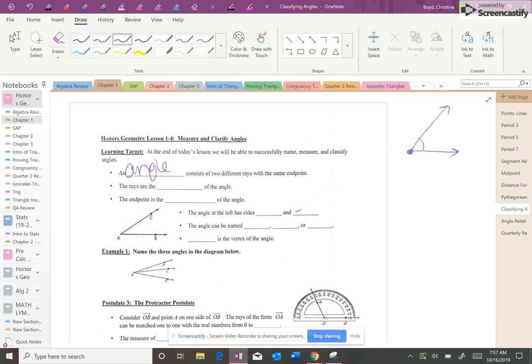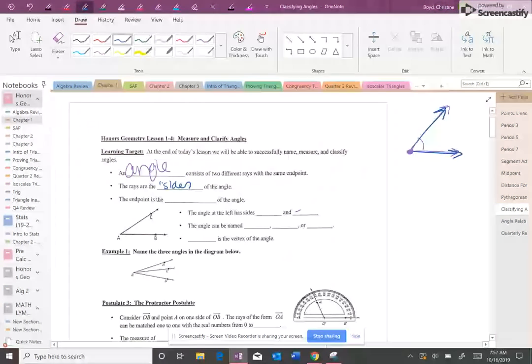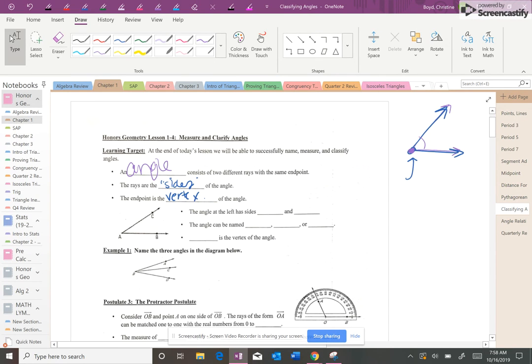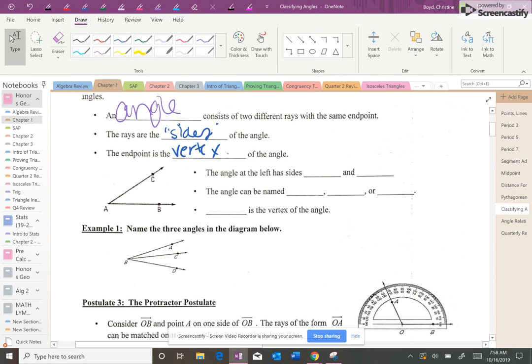And when this happens, you get an angle. The rays are like the sides of the angle. And the endpoint that they have in common, that's the important thing, is called the vertex. So for example, in this picture, the sides of the angle start at A, and it goes A to C, and A to B.